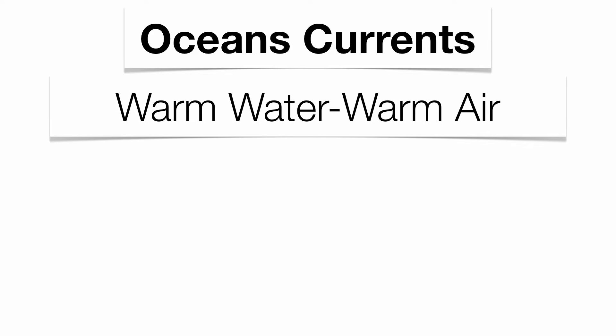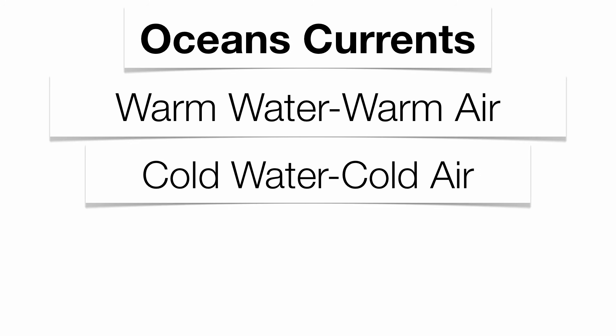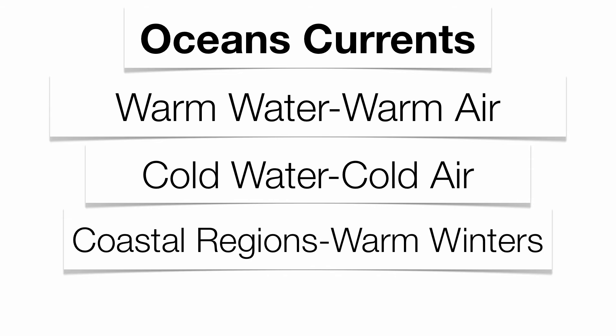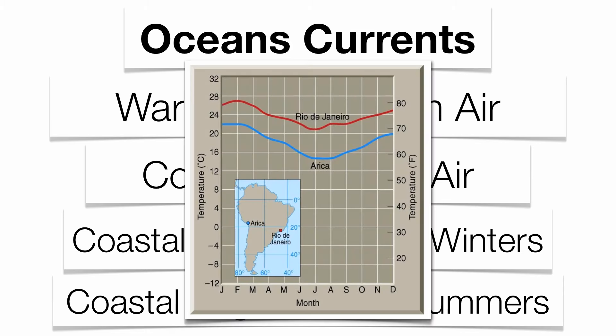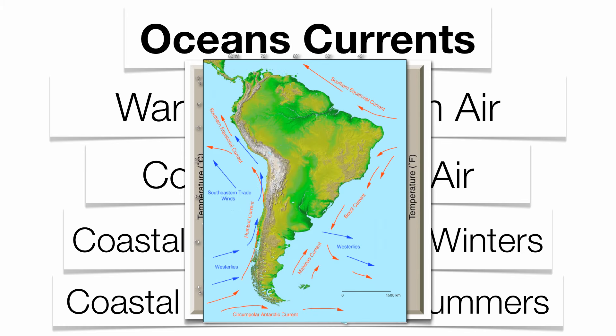Ocean currents also have a major impact on climates. If you live near a warm water current, the air above the warm water tends to be warm. If you live near a cold water current, the air above the cold water tends to be cold. Take a look at Erika and Rio de Janeiro — they have dramatically different temperatures because they're close to different types of ocean currents. Erika is near a cold water current and Rio de Janeiro is near a warm water current, even though they're at about the same latitude.